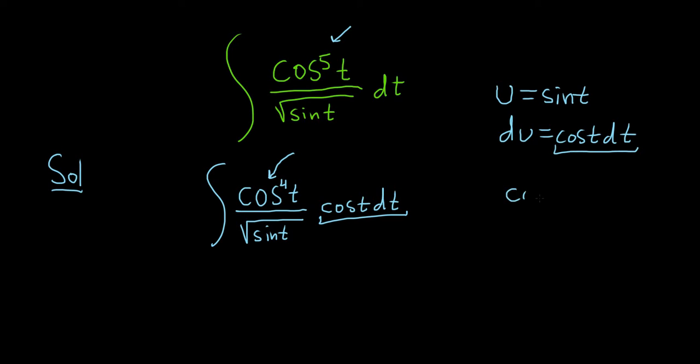So recall that cosine squared of t is equal to 1 minus sine squared of t. So what we can do here is we can write cosine to the fourth power as 1 minus sine squared of t squared. And then here we have square root of sine t, and then cosine t dt.